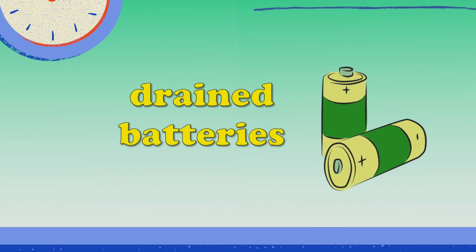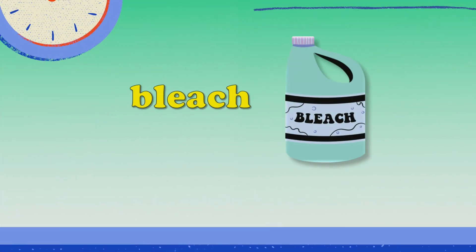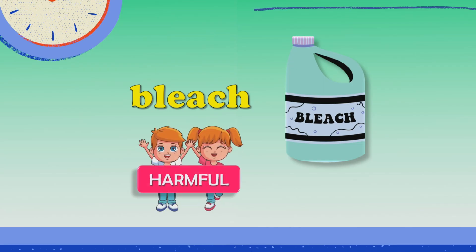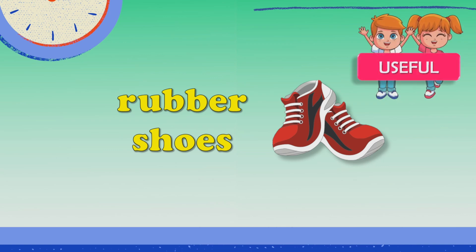Next, we have drained batteries. Very good! The answer is harmful. How about bleach? Bleach is an example of a harmful material. Last one, we have rubber shoes. Great! Rubber shoes are an example of a useful material.